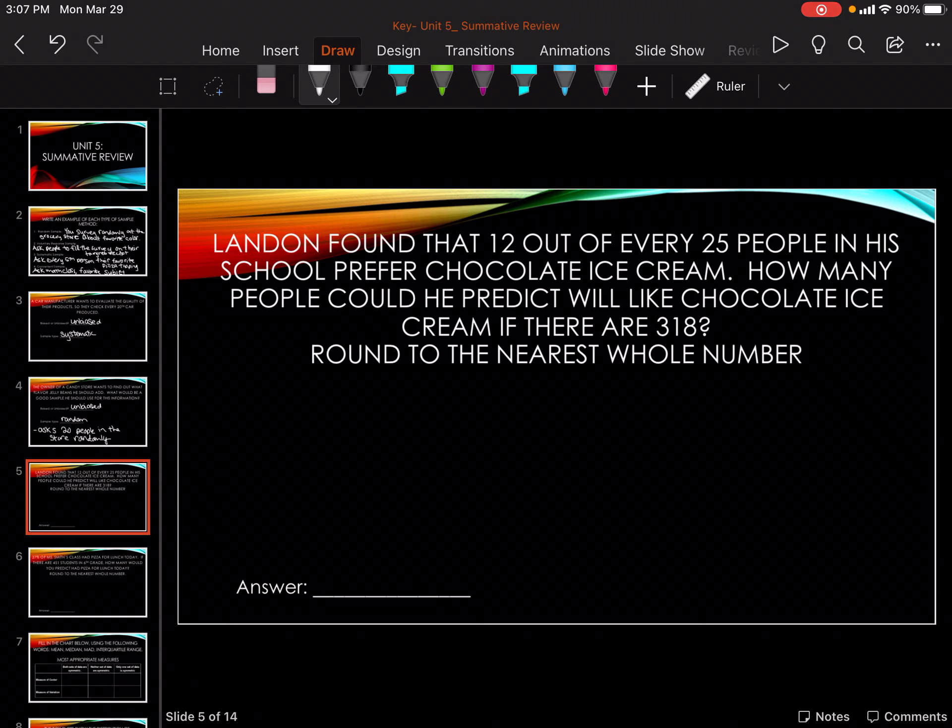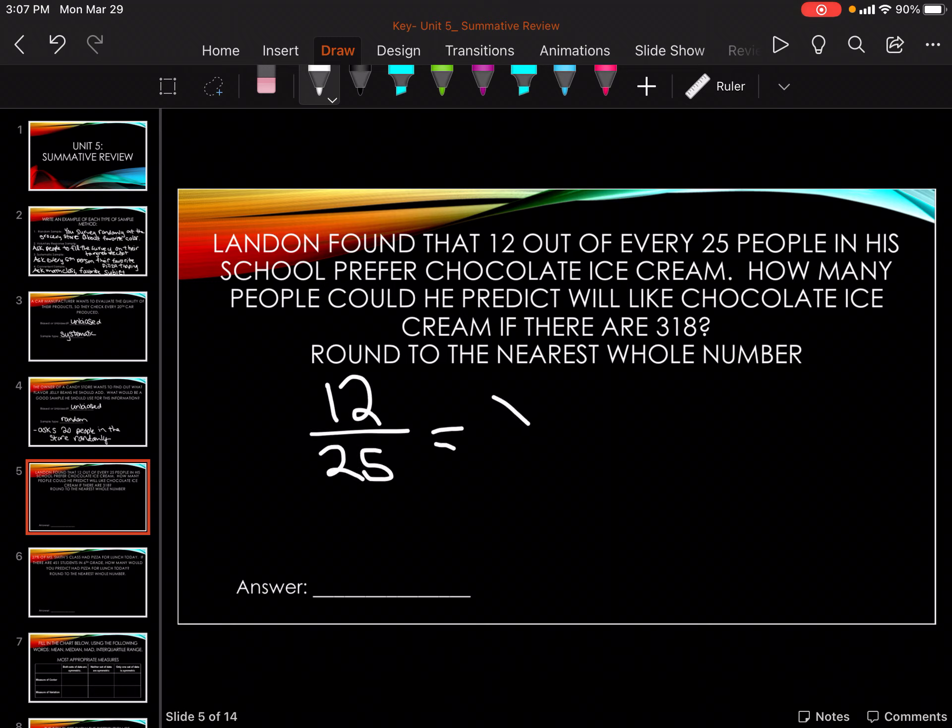Landon found out that 12 out of 25 people in the school prefer chocolate ice cream. How many people would he predict like chocolate ice cream if there's 318? Round to the nearest whole number. So 12 out of 25 equals x over 318. Cross multiply divide. So 12 times 318 divided by 25 gets you 152, nearest whole number 153 students.